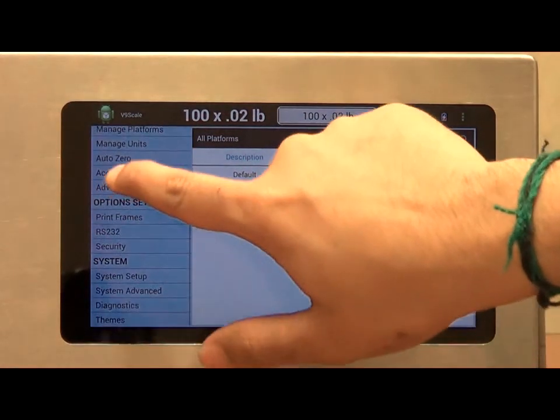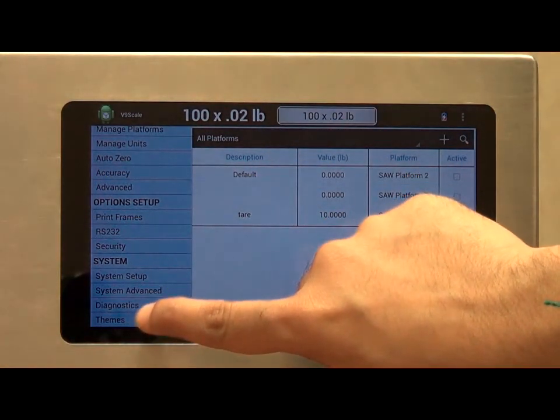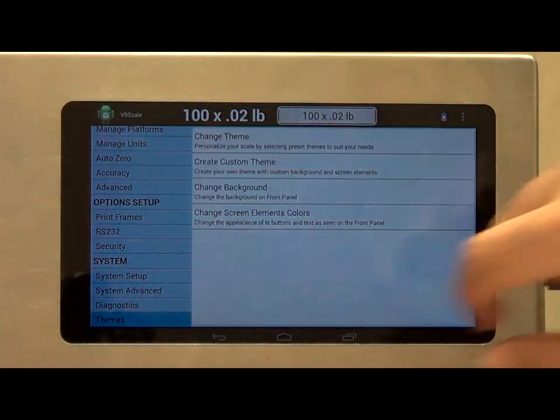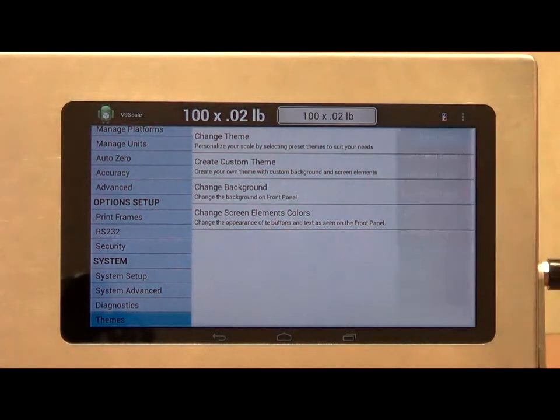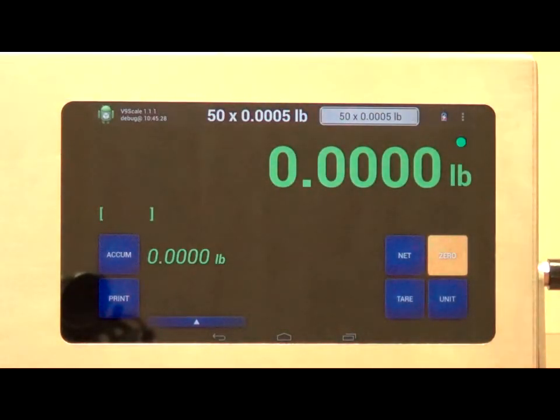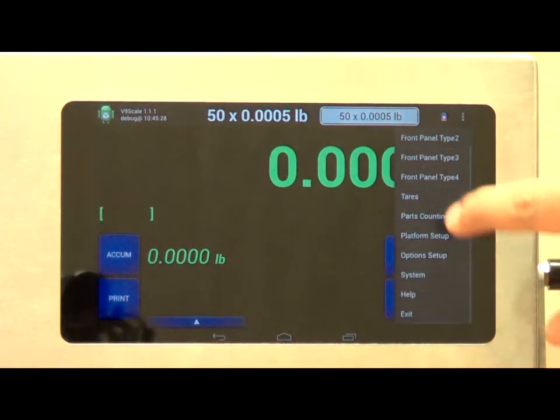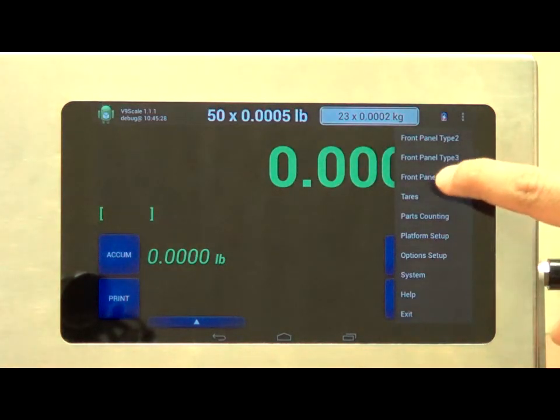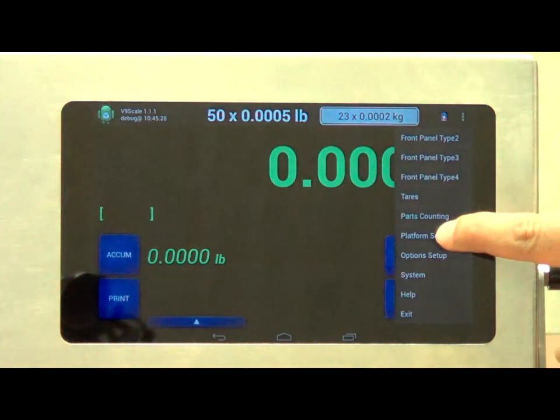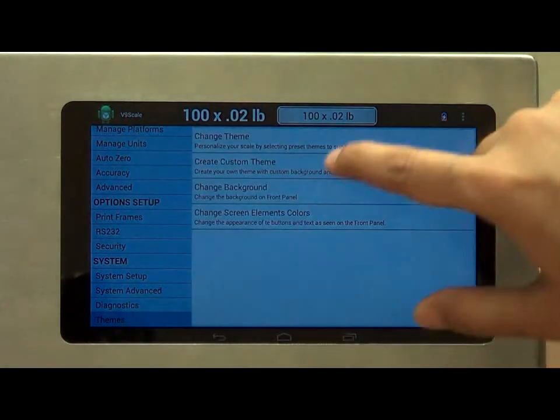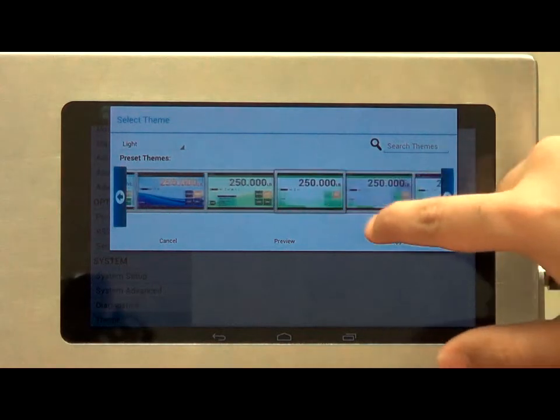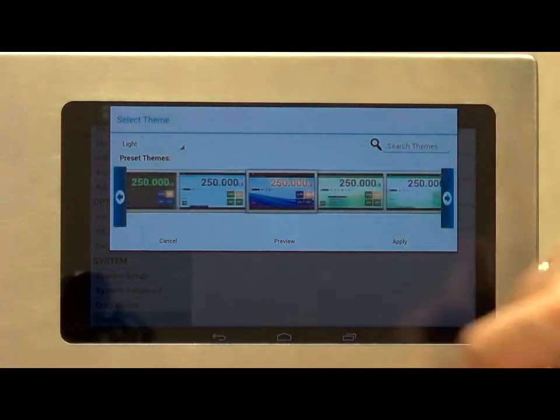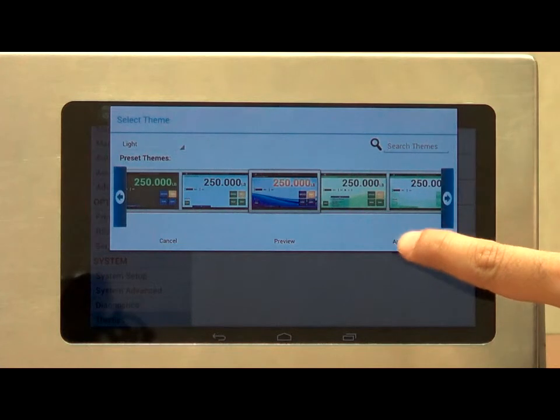In addition to that, we want to show you this very cool feature called Themes. Initially, in our front panel, we have a black background using green text. But if I don't like that, or if I would like to have a more lively layout, I could choose a different theme. I have a range of preset selections. I would like to choose a blue background with orange text. I hit Apply.